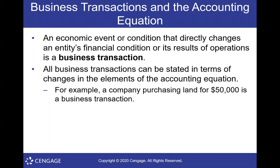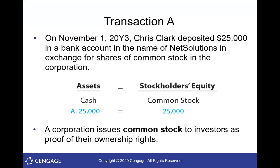Here's our first transaction: Chris Clark deposits $25,000 in a bank account in the name of Net Solutions in exchange for shares of common stock in the corporation. We have an individual who filed the paperwork to create a corporation and is now funding it. The book uses '2-0-Y-3' notation — the Y just means some given year, so they're trying to keep it relevant across different years. Don't let it bug you.